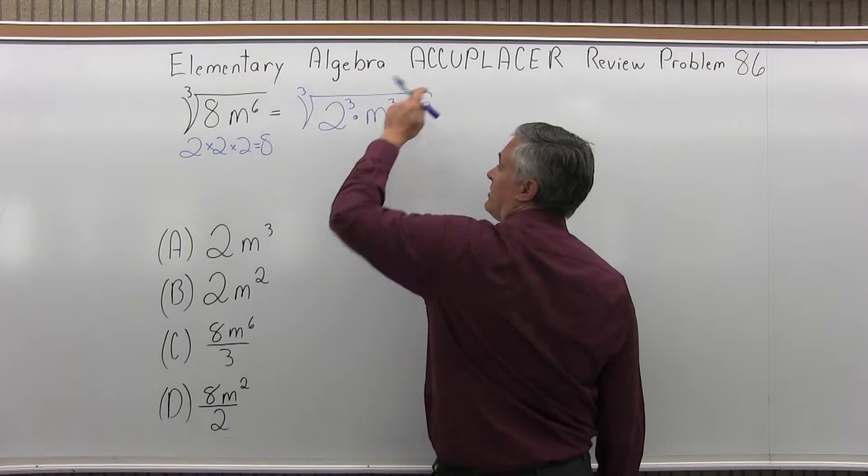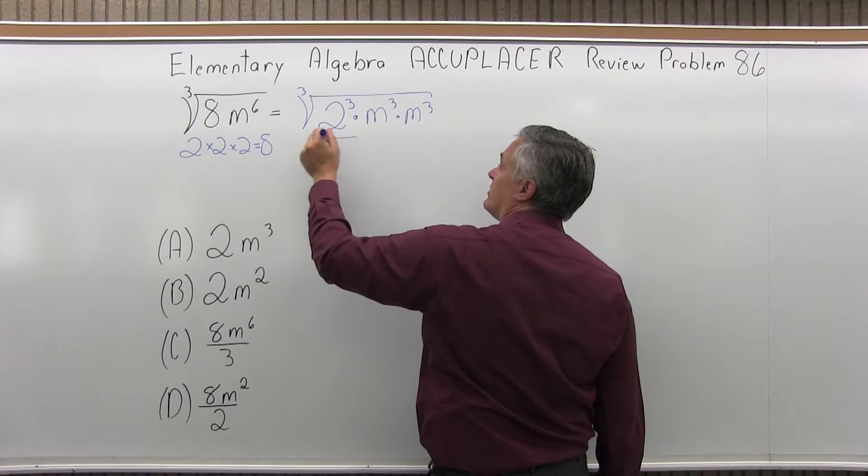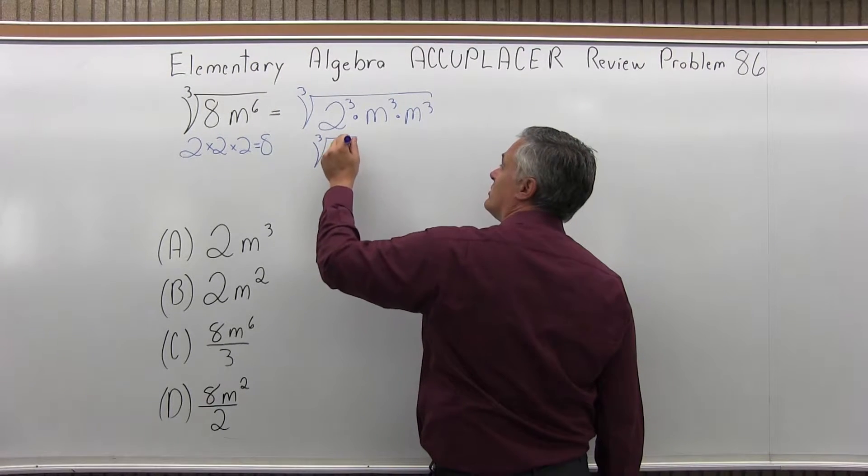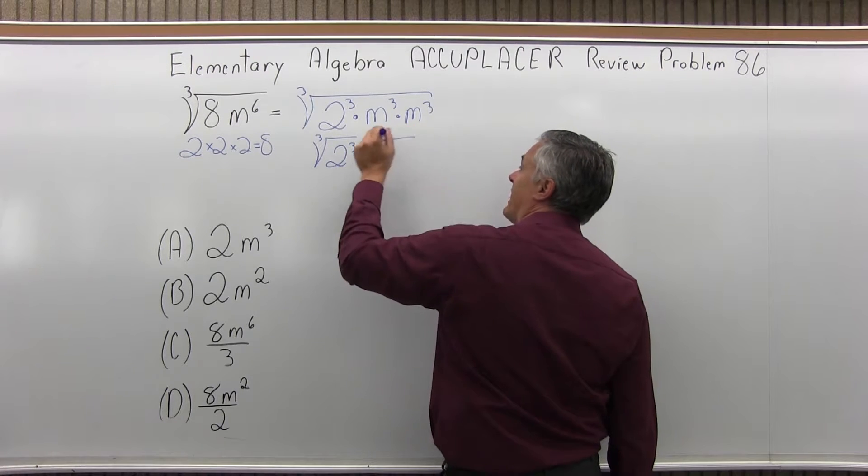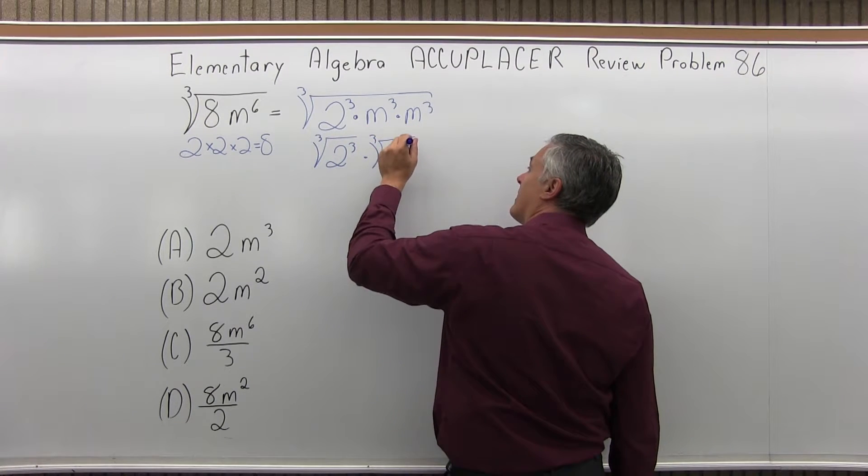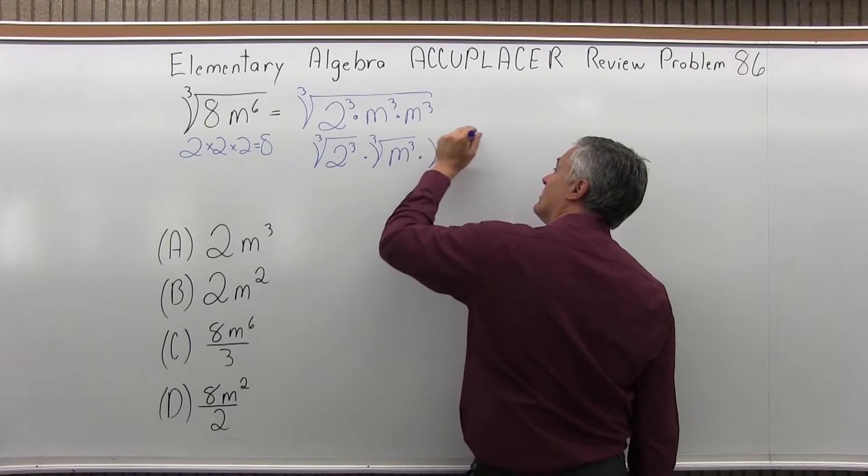And now instead of one big cube root, I'm going to split it into a few smaller cube roots. The cube root of 2 cubed times the cube root of m cubed times the cube root of m cubed again.